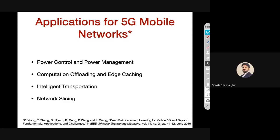Specific to 5G networks — I looked into different kinds of work people are doing for 5G mobile networks using deep reinforcement learning. Particular application areas listed in a 2019 Vehicular Technology magazine paper include power control and power management, computational offloading and edge caching, intelligent transportation, and network slicing. You can find the use of reinforcement learning in all these kinds of problems and their sub-problems, like power control in cellular networks.